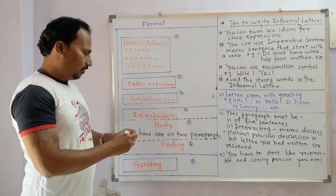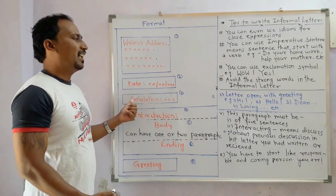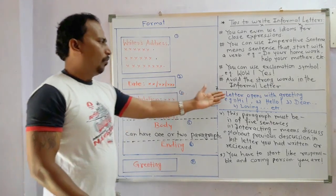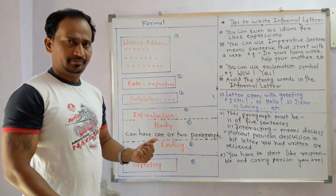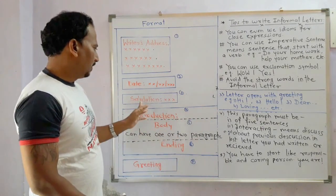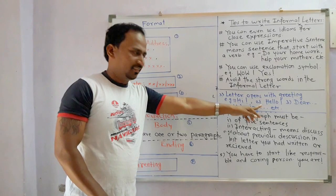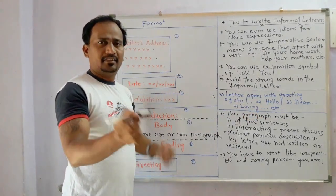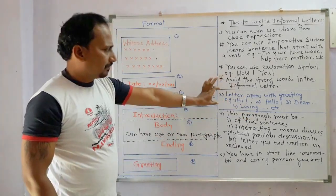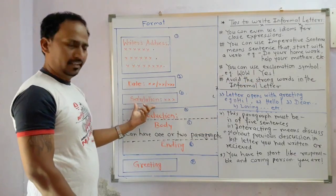Now we have to start our letter writing. First one is the salutation. Salutation means the letter opens with a greeting — the beginning of the letter. For example, salutation can start with 'Hi,' 'Hello,' 'Dear Friend,' 'Dear Mom,' 'Dear Aunt,' or 'Loving,' etc. This is the opening greeting, or the beginning, and that is called salutation. Then we have to put a comma.